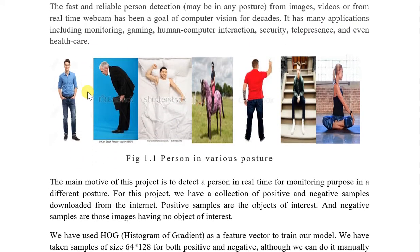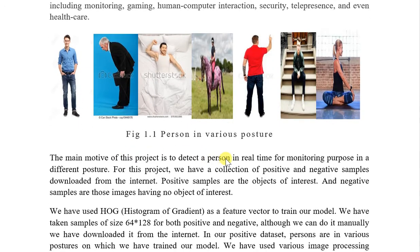The main motive of this project is to detect a person in real-time for monitoring purposes in different postures. For this project, we have a collection of positive and negative samples downloaded from the internet. Positive samples are the object of interest, and negative samples are those images having no object of interest.